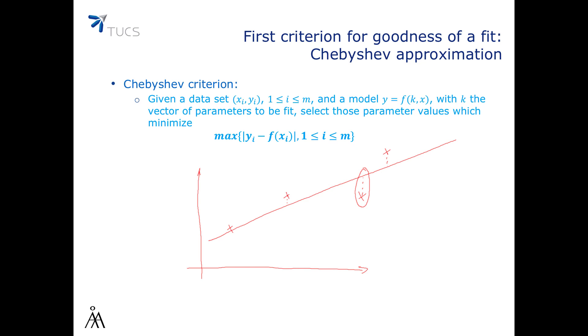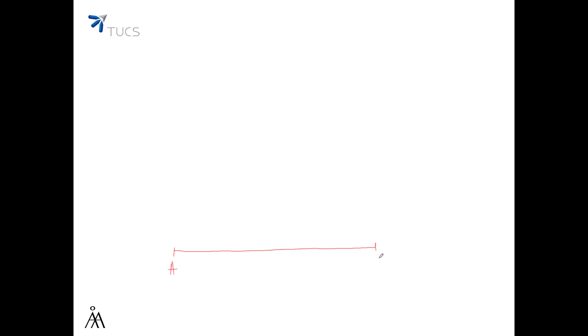We aim in this case to find the parameter values that minimize the largest deviation of the model from the data points. As an example, we are given a segment AC and a point B on segment AC. We are also given the measurements of the segments: AC is 19, AB is 13, and BC is 7.